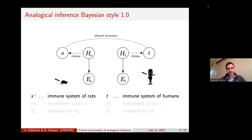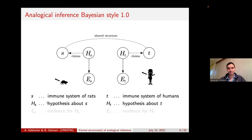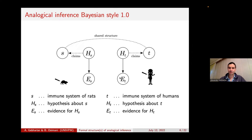Let me introduce a few variables. Small s will stand for the source system — that's the immune system of rats in our example. Small t will stand for the target system — that's the immune system of humans. We need two binary variables for the hypotheses: HS is the hypothesis about the rat system, for example that the antiviral compound is effective without severe side effects for rats. HT makes the same claim but for humans. We could also have pieces of evidence ES for the source system and ET for the target system, as illustrated in the picture.